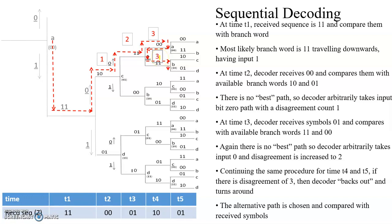Since the disagreement count is 3, we turn around and move to the other branch. Comparing 1,1 with received 1,0, the difference is 1, plus the previous 2, giving a disagreement count of 3. So we turn around and choose the downward path. At time period T3, comparing 0,0 with received 0,1, there is a difference of 1 bit, so the total disagreement count is 1 plus 1, which is 2.